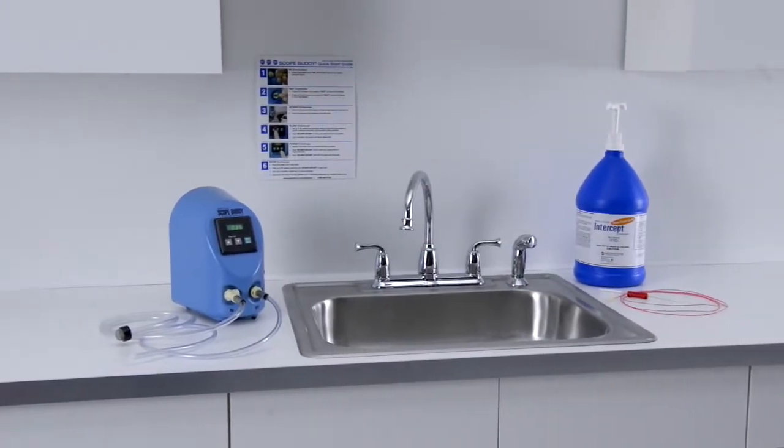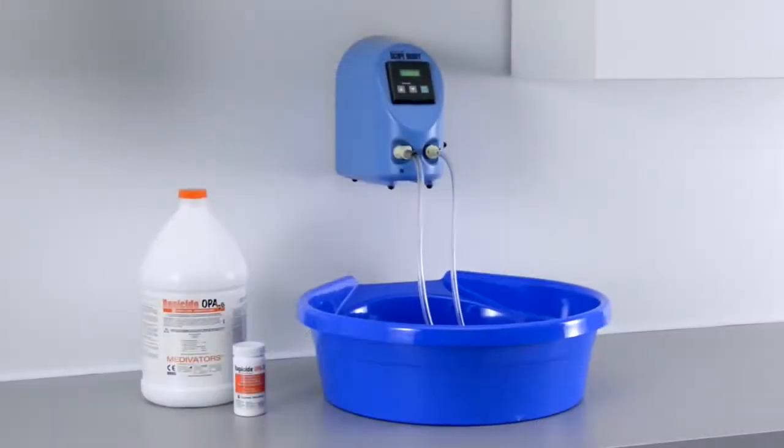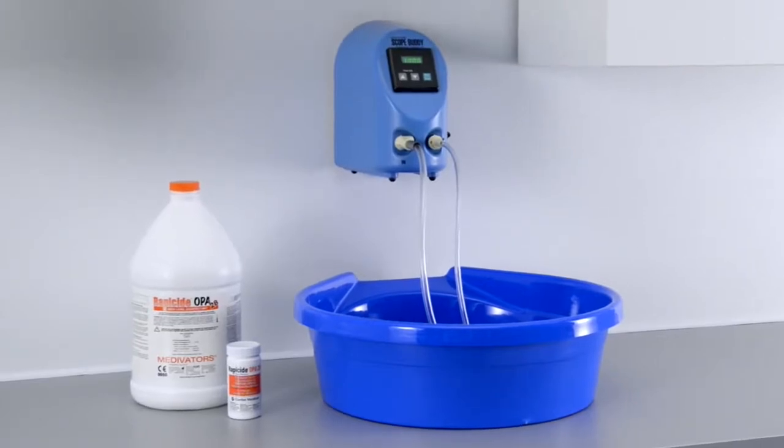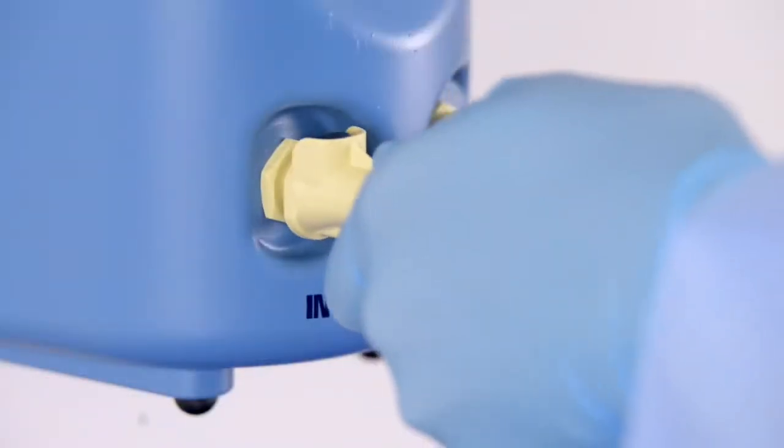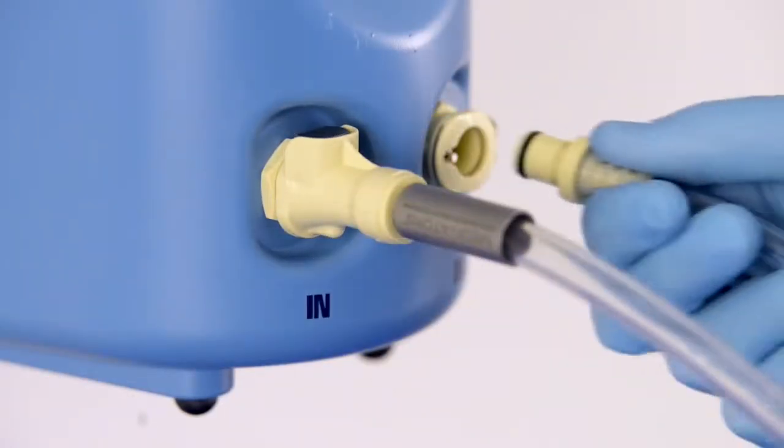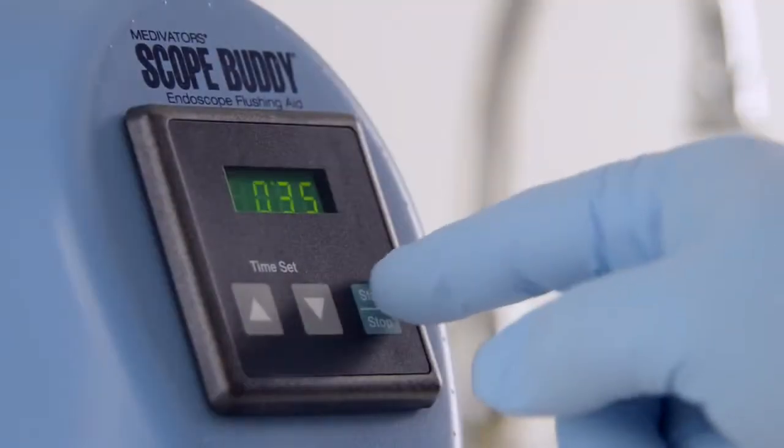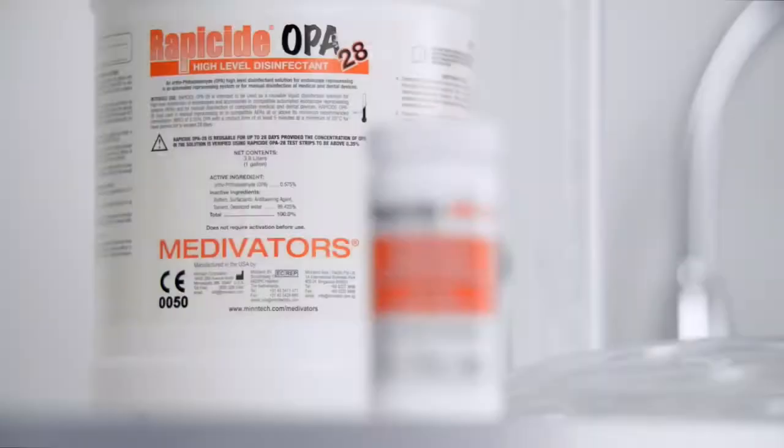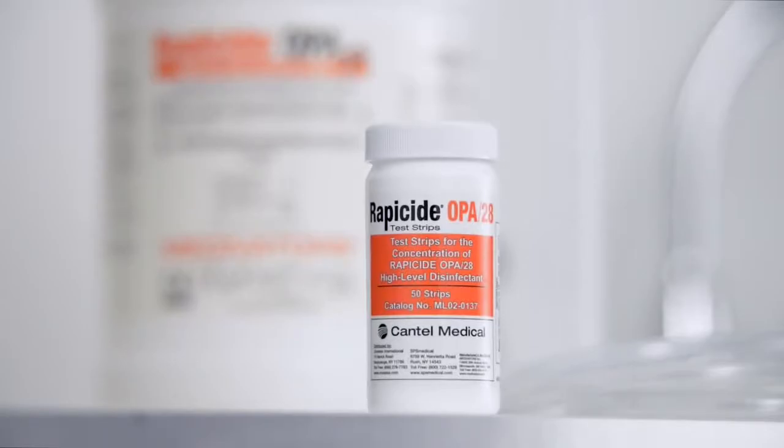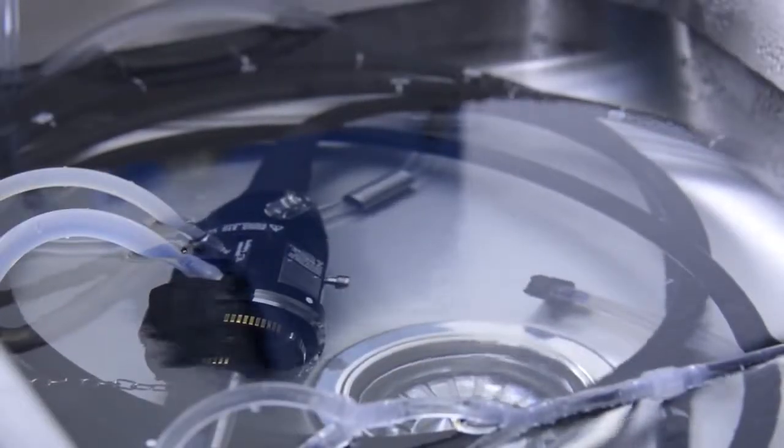ScopeBuddy recirculates fluid through endoscope channels during all steps of reprocessing. By introducing automation into the flushing process, ScopeBuddy eliminates the need for manual syringing during the manual cleaning, high-level disinfection, and rinsing steps of reprocessing flexible endoscopes.